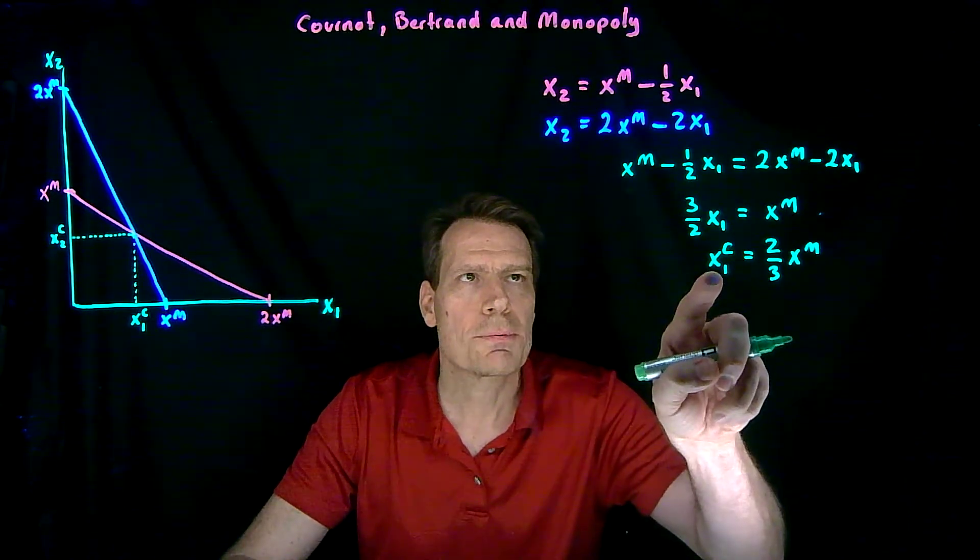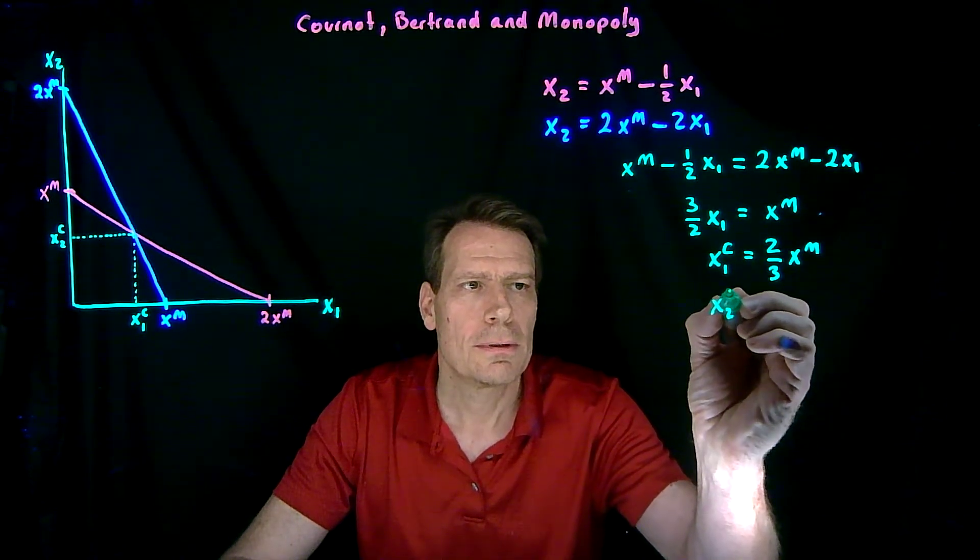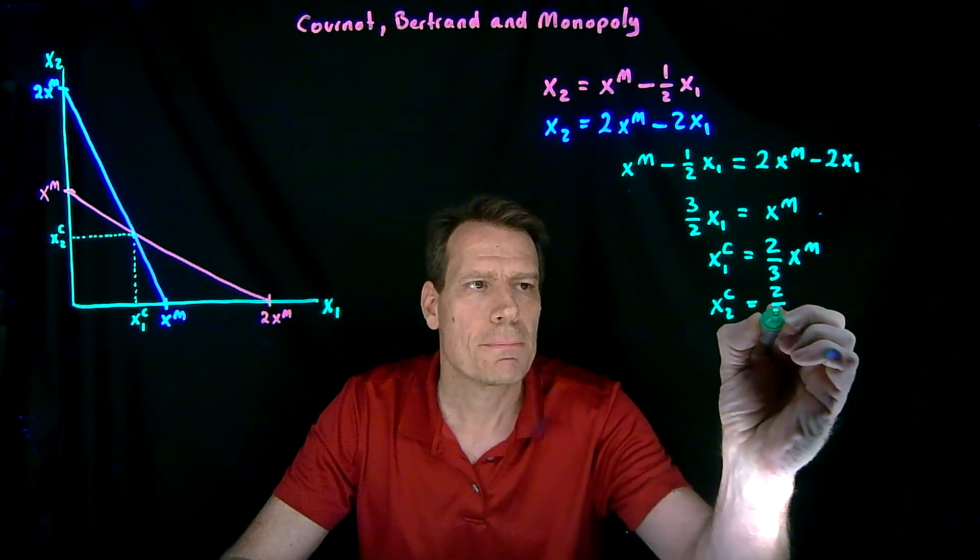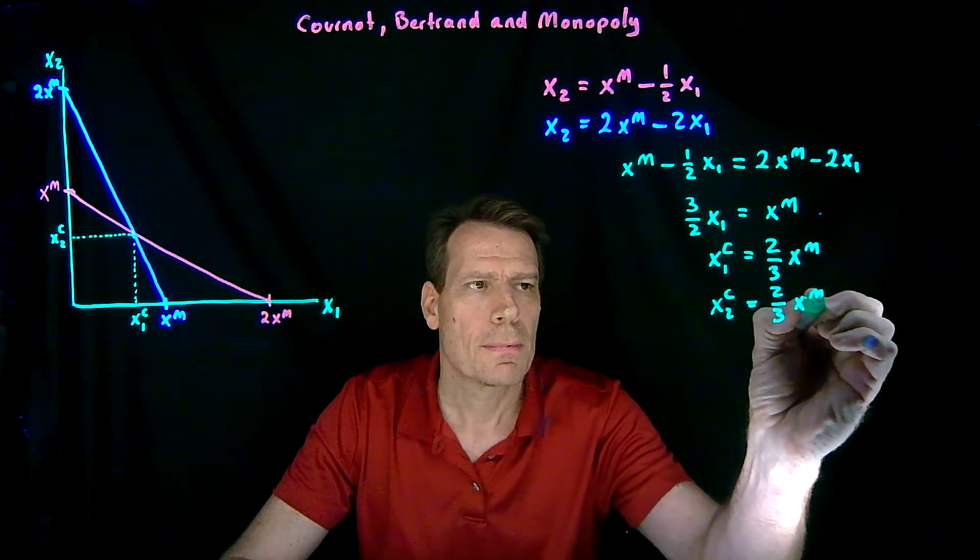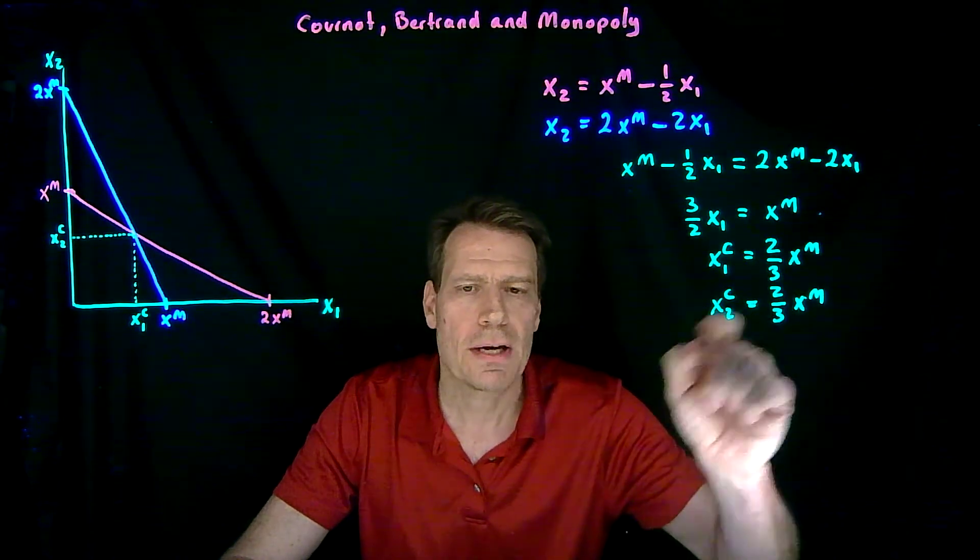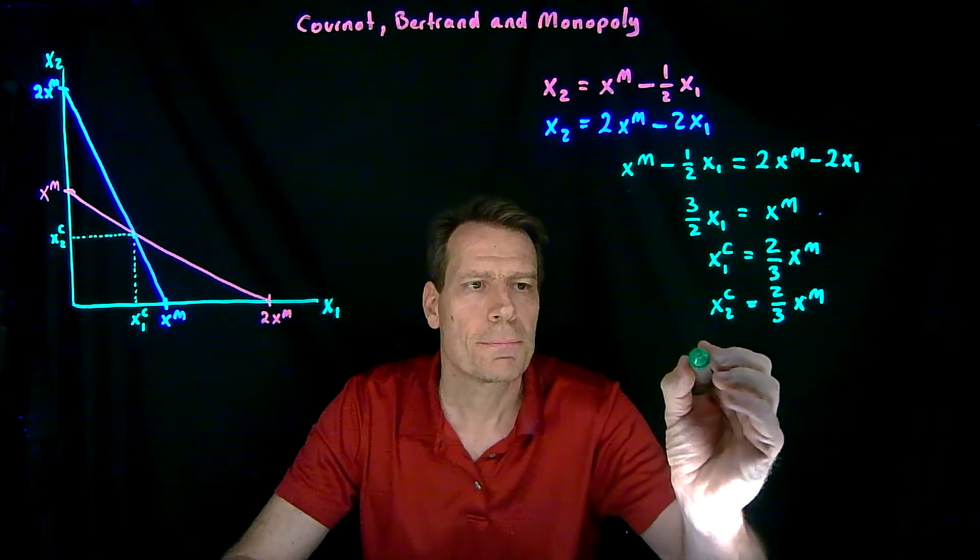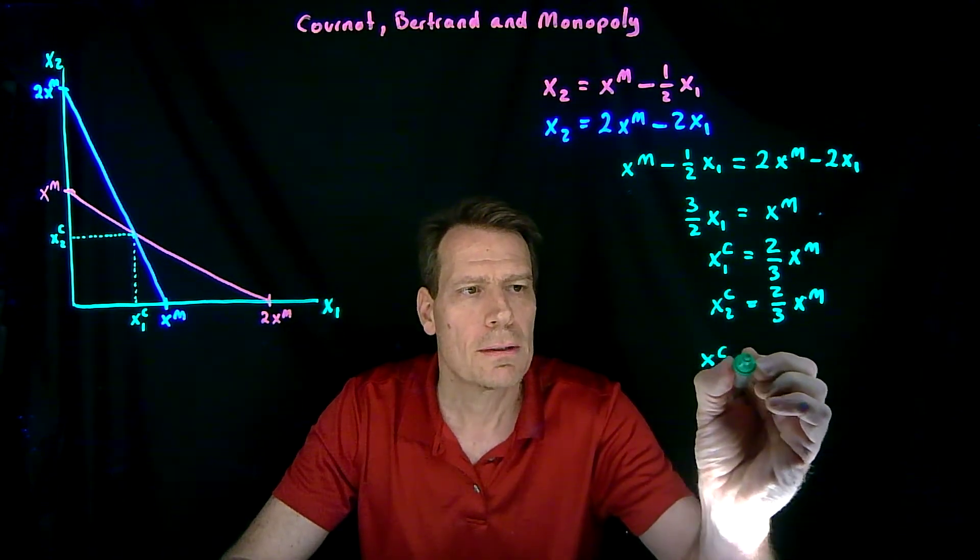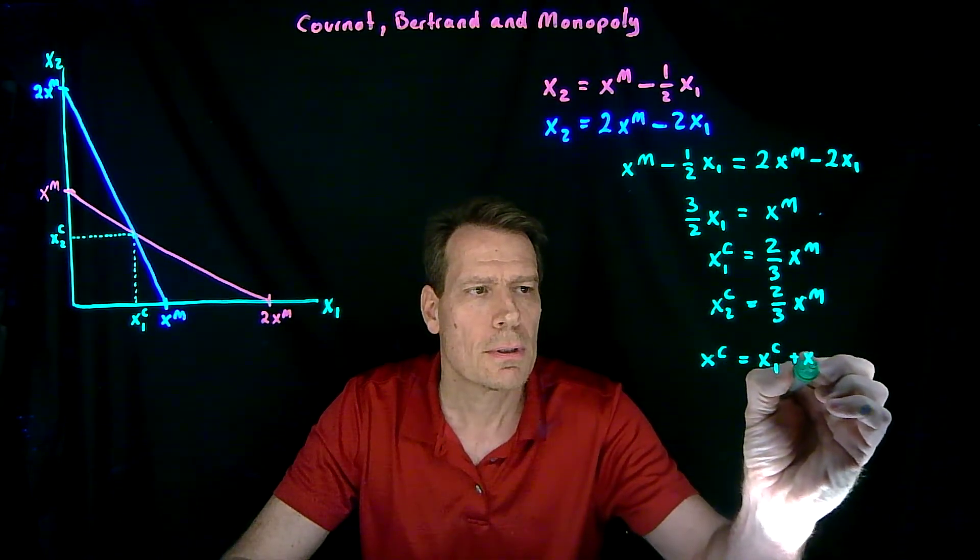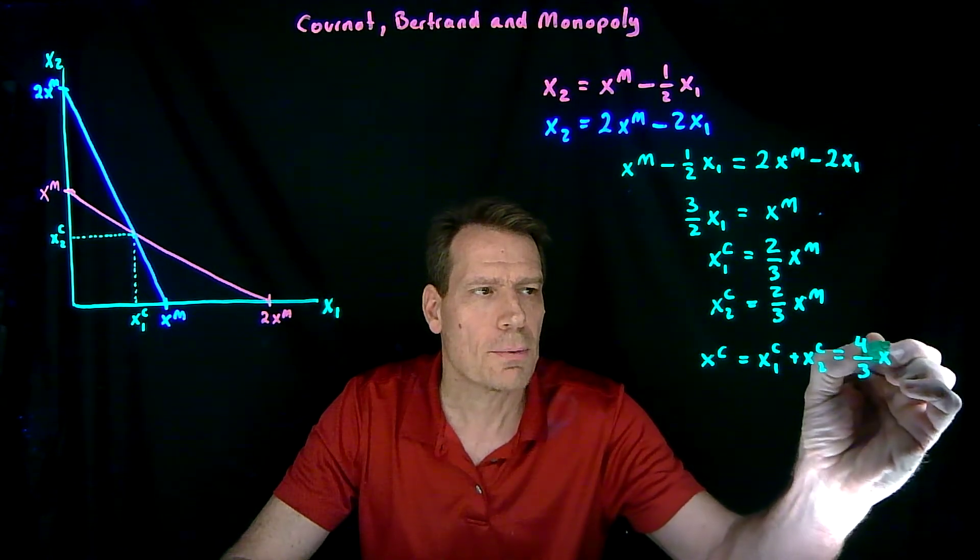If we then substitute that into either of those equations, we can get x2, the Cournot quantity, and that's going to be the same. So the Cournot competitors together are going to produce 4 thirds of xm, so they're going to produce more than the monopoly quantity. The Cournot quantity, which is just the sum of what the two firms produce, is equal to 4 thirds the monopoly quantity.